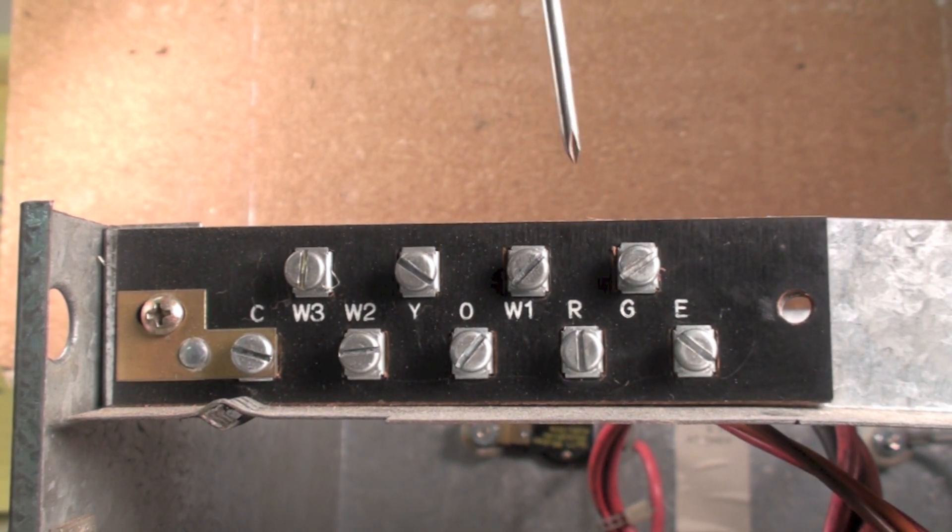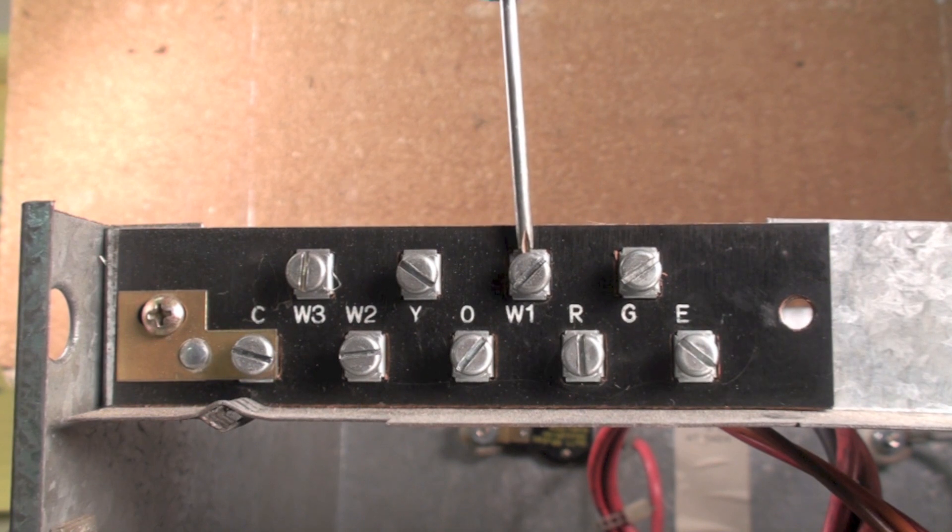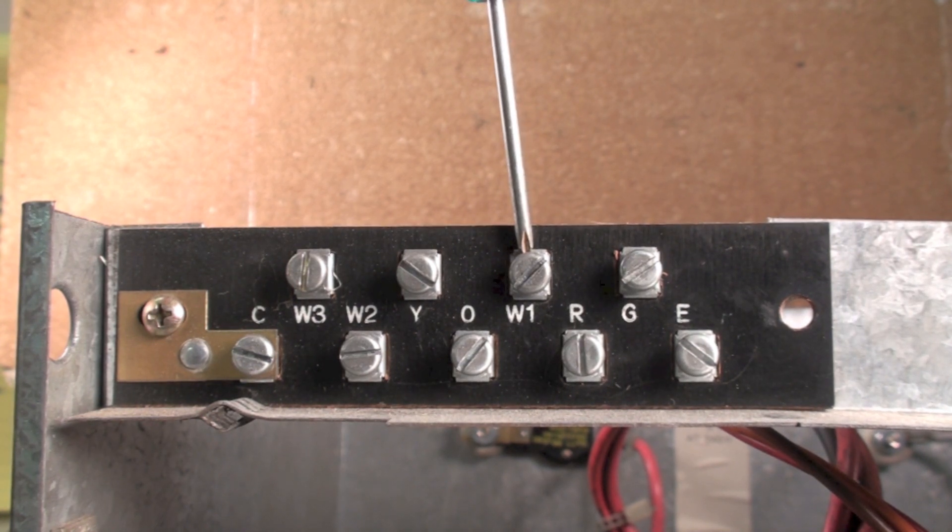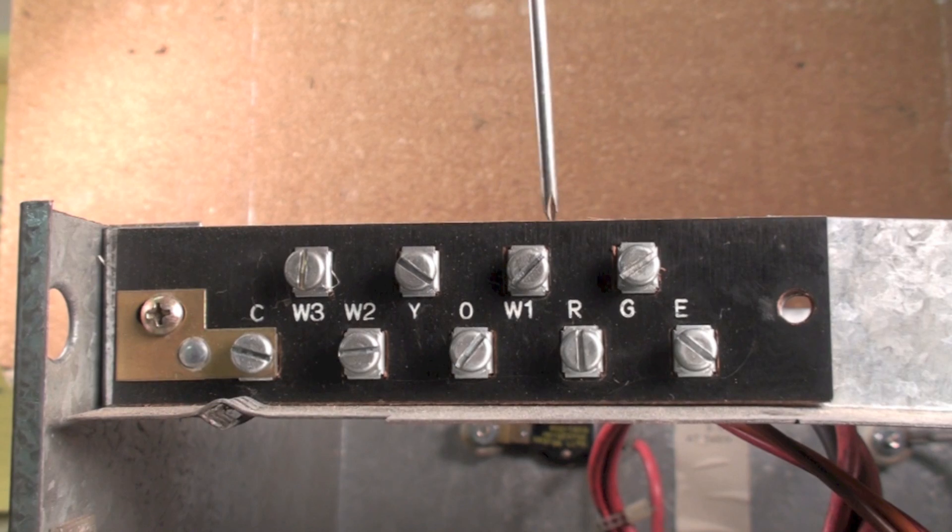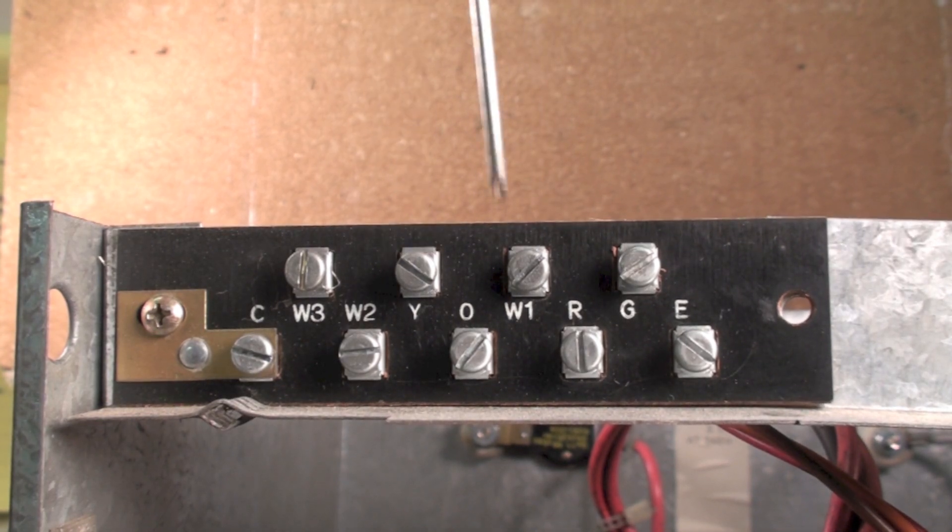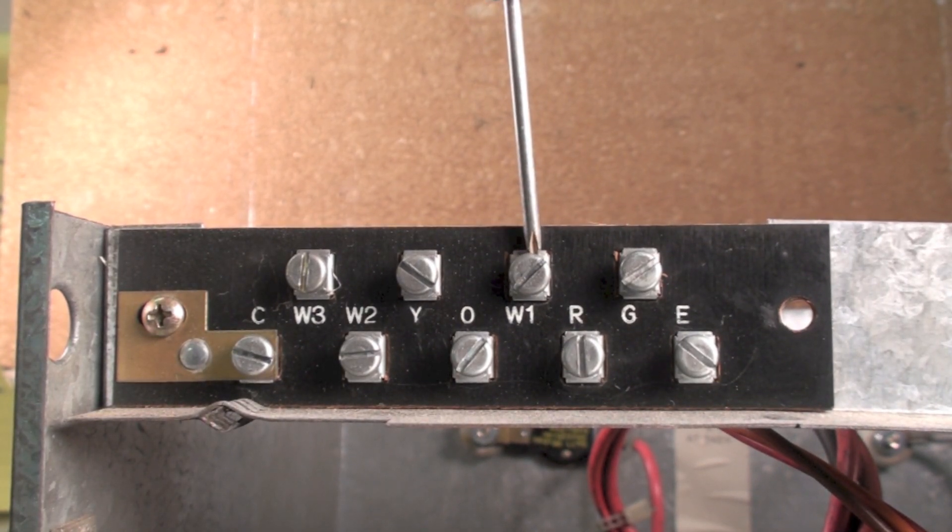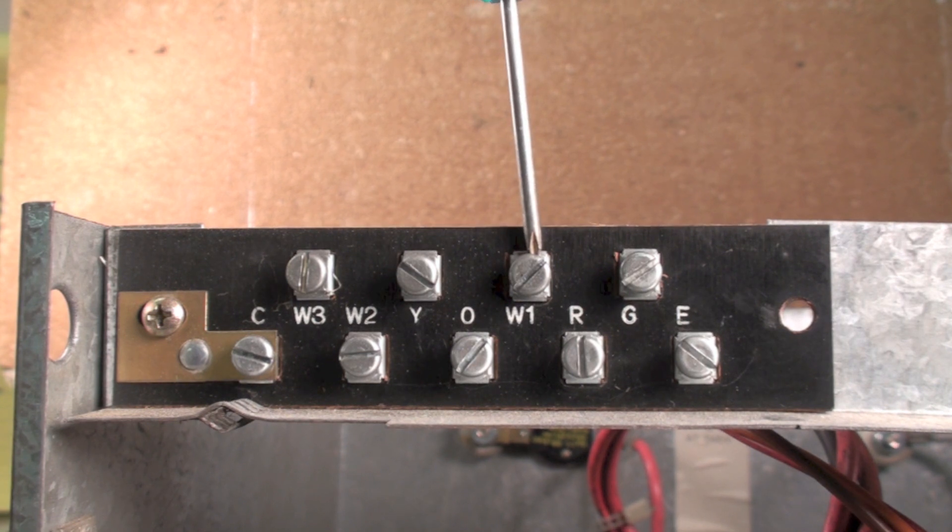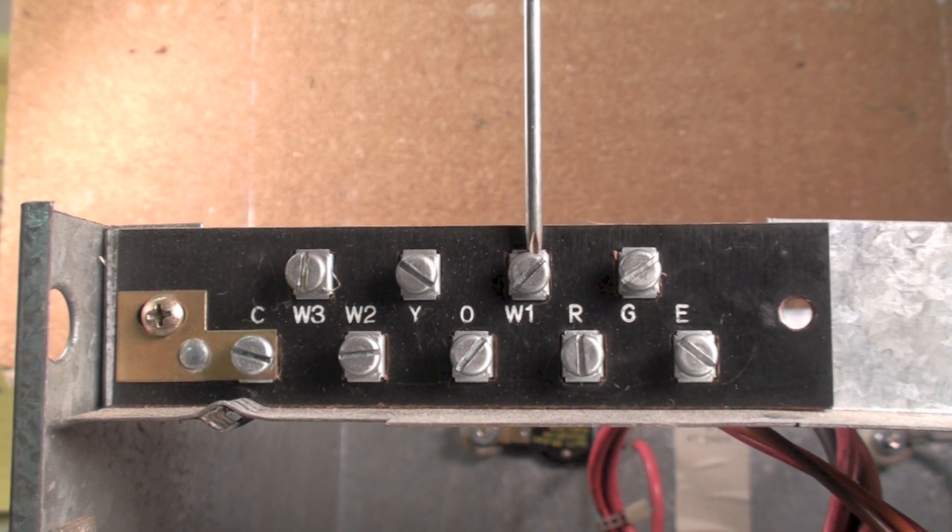It goes to W1 and puts W1 in first stage. Remember, when you had Y and W1, this was first stage, this was second stage. If I put the thermostat in emergency heat, then I will have power to E.